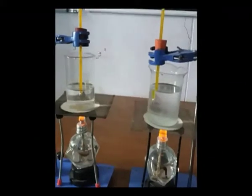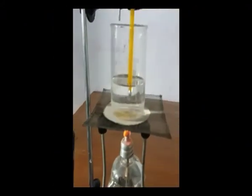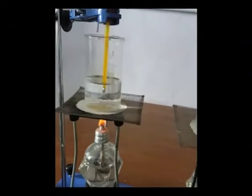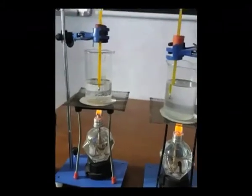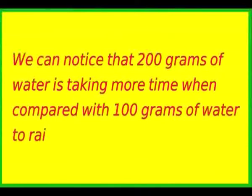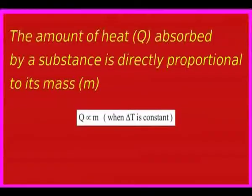Now heat both beakers until the temperature of water rises to 60 degrees Celsius, and observe the time required to raise the temperature in each beaker. We can notice that 200 grams of water takes more time compared with 100 grams of water to reach 60 degrees Celsius. So the amount of heat absorbed by a substance is directly proportional to its mass — that is, Q is proportional to M.